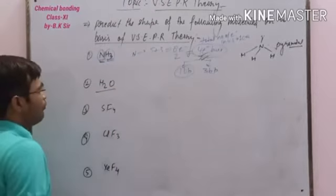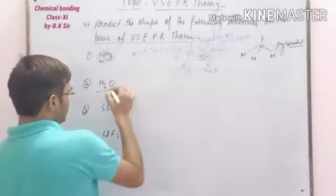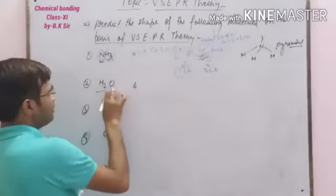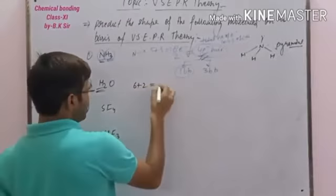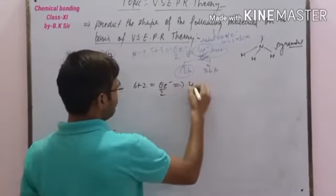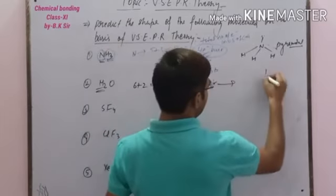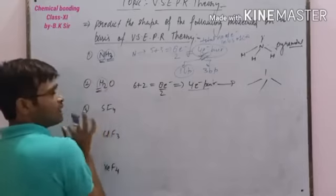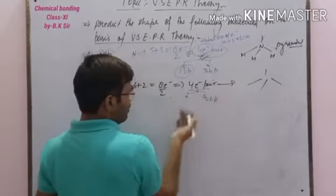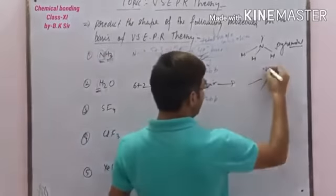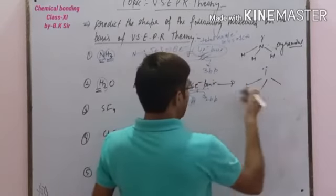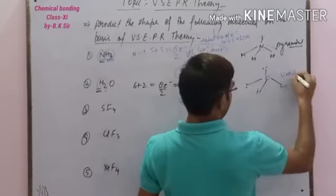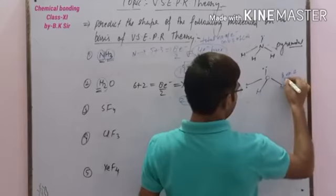Now let us discuss about water (H₂O). In this molecule, oxygen is the central atom. In the valence shell of oxygen there are 6 electrons, and there are 2 electrons from hydrogen, so the total number of electrons is 8. The number of electron pairs is 4. Due to 4 electron pairs, the geometry should be tetrahedral. But out of 4 electron pairs, there are only 2 bond pairs, because 2 hydrogen atoms are attached, and the remaining 2 are lone pairs. So the shape of the molecule is bent, also known as V-shape.